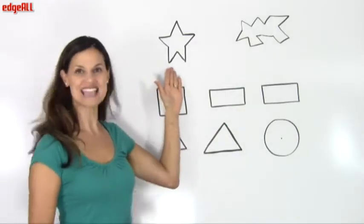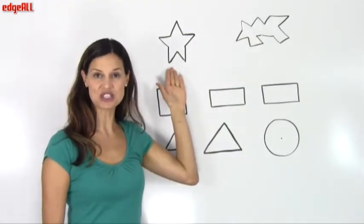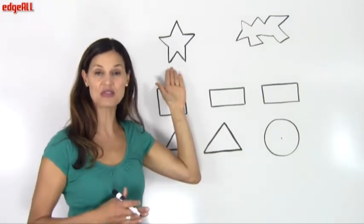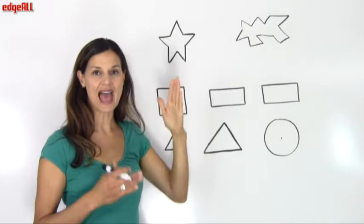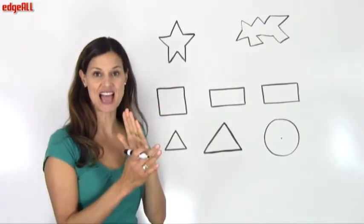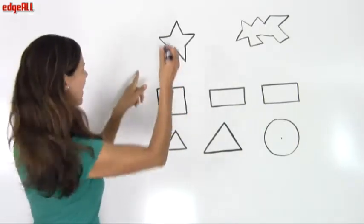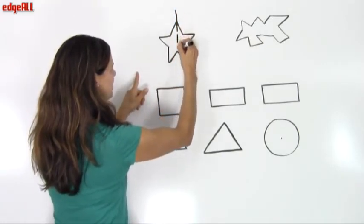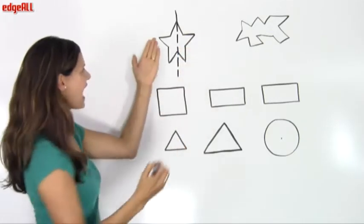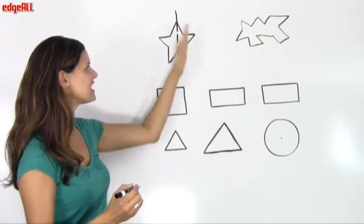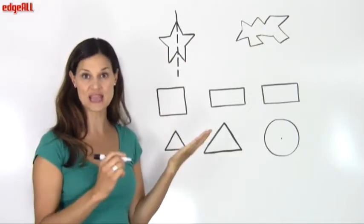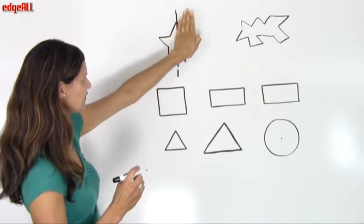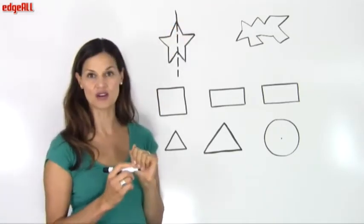Here I have an example of a symmetrical shape. It has at least one line that I can draw through the shape that will have a reflection of each other on each side of the line. So if I draw a line right down here through the middle of this shape, you can see that the shapes on either side of the line are mirror images of each other.